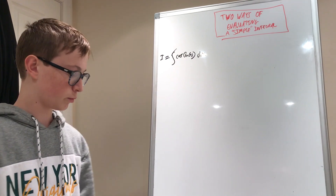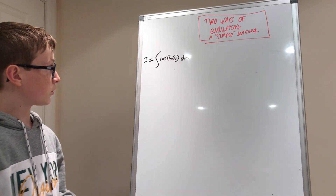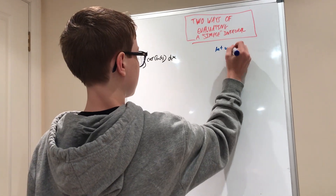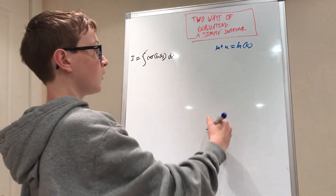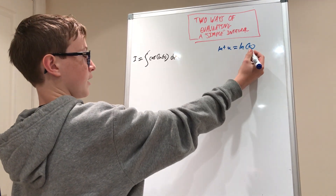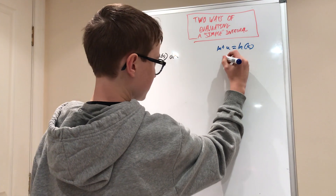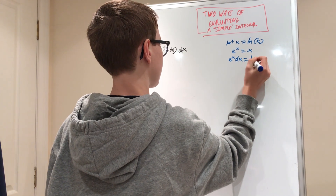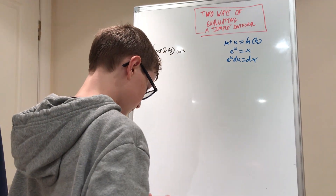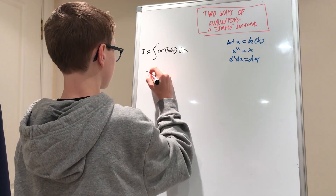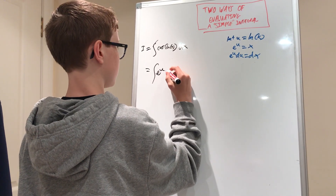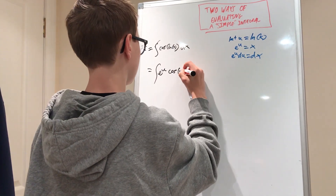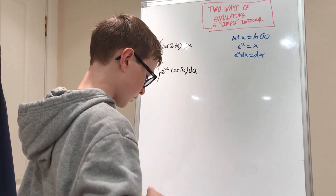Let's get right into the u-sub method. If we let u equal ln x, then to isolate x we do e to both sides: e to the u equals x. Differentiating both sides gives e to the u du equals dx. Plugging that in, the integral becomes e to the u times cosine of u du, since cosine of ln x is just cosine u.